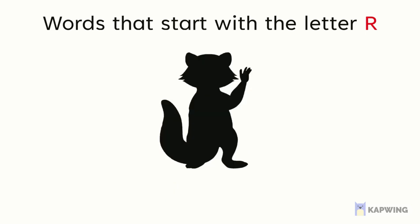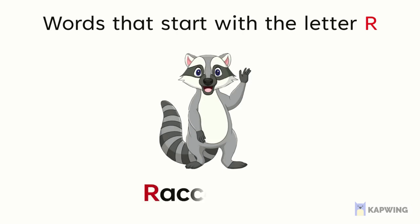Can you guess what this is? It's another word that starts with the letter R. It was a character in our story, Rick and Rosie Build a Robot. You're right! It is a raccoon. Raccoon starts with the letter R.